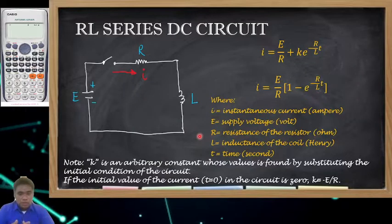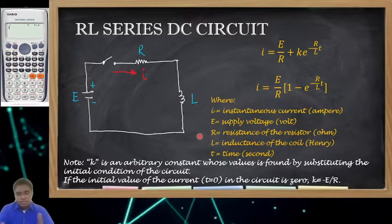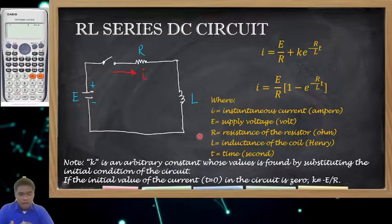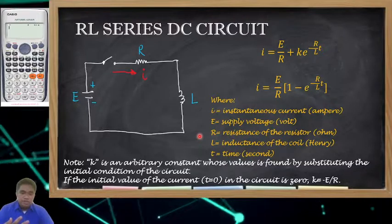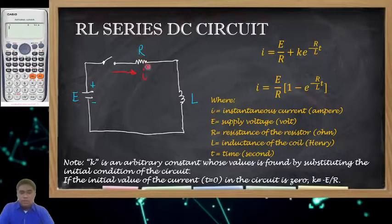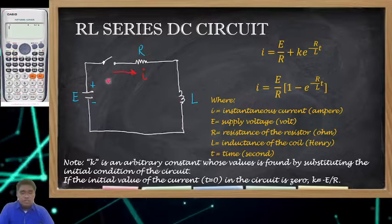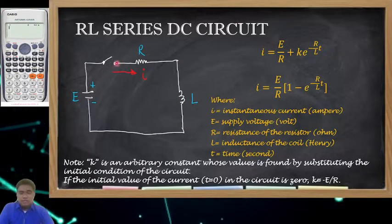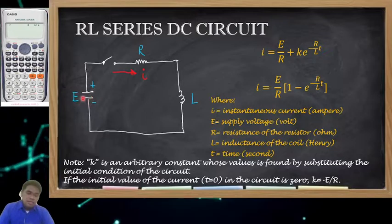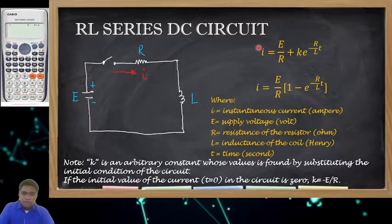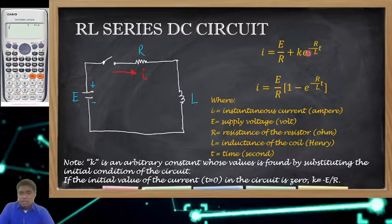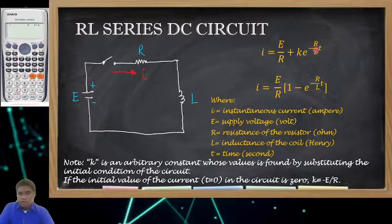We will now analyze the transient response — the transient period — of an RL series DC circuit. When we say RL, our circuit will consist of a resistor and an inductor connected in series. We have our switch, and at time zero the switch is off. We have a DC voltage denoted by E. To get the current I, we have: I equals E over R plus K times E raised to the power of negative R over L times T.